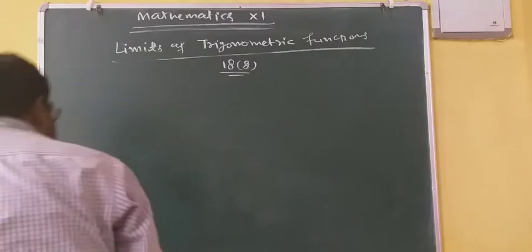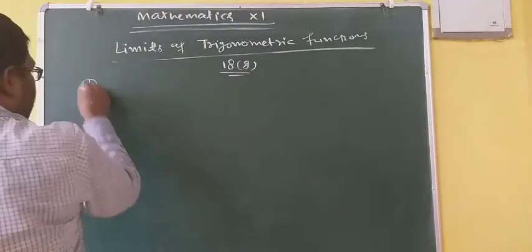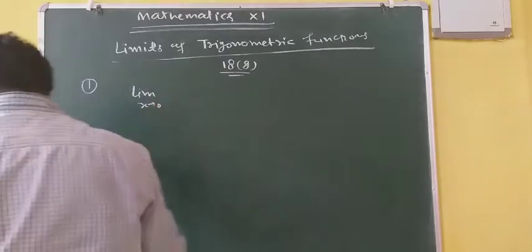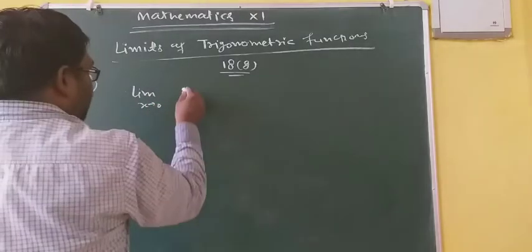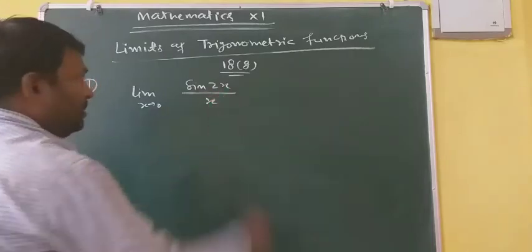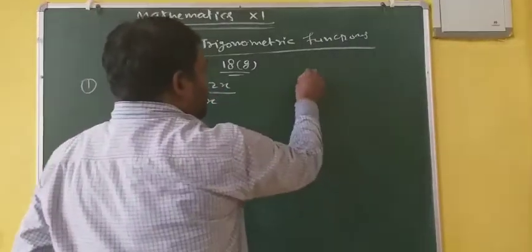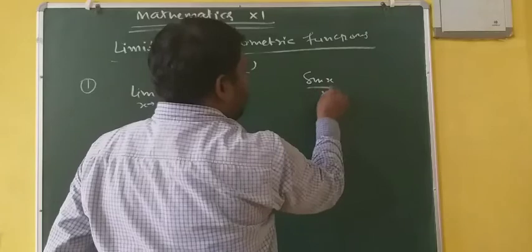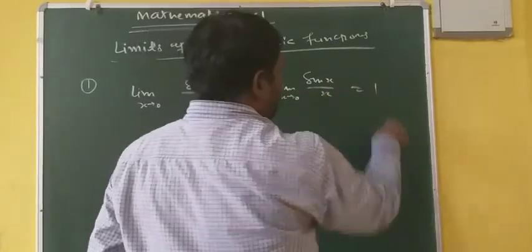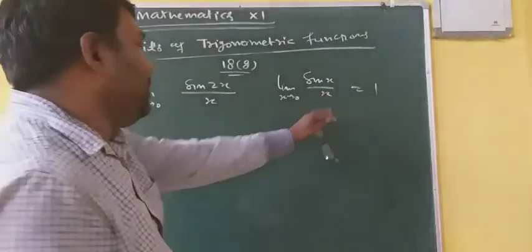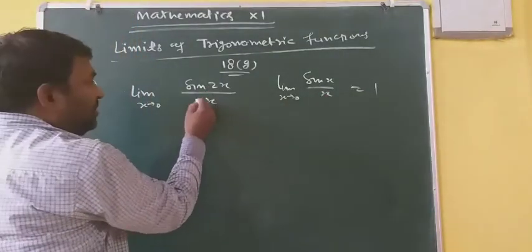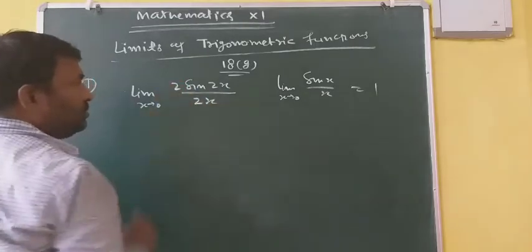First question: limit x tends to 0 of sin 2x upon x. I have told you earlier that limit x tends to 0 of sin x upon x gives 1. By using this formula, since here we have sin 2x but only x in the denominator, that's why we multiply and divide by 2.